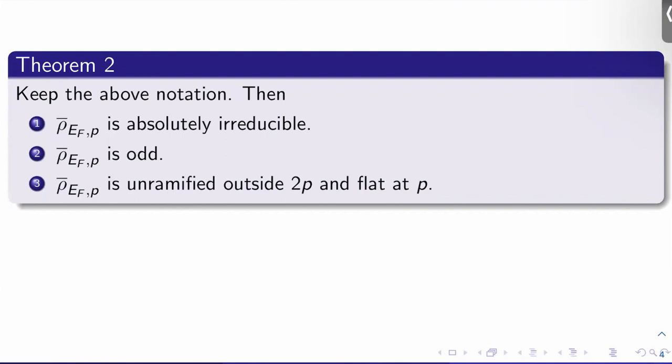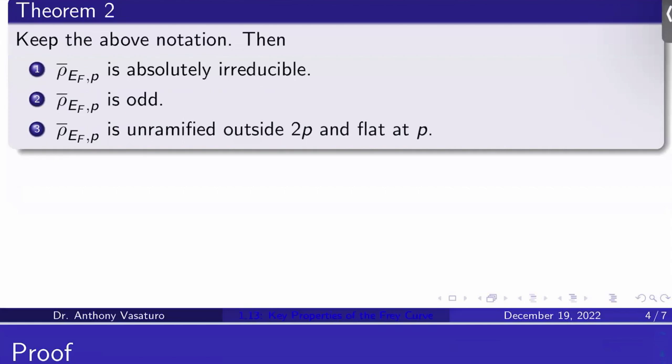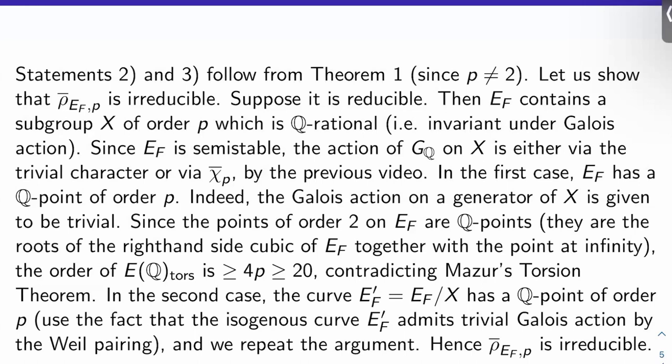Now, why is this residual representation mod P absolutely irreducible? That's the question. Okay, so I'm going to prove that for you. First, we're going to show it's just irreducible. So suppose that it's reducible. What does that mean?